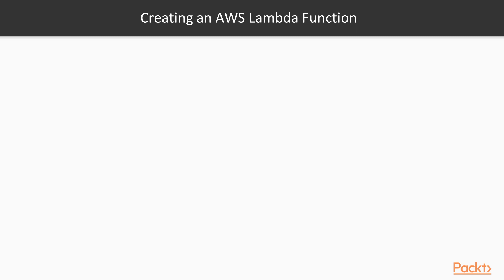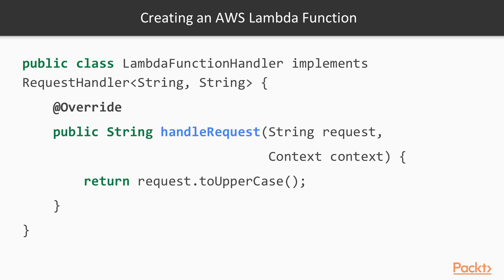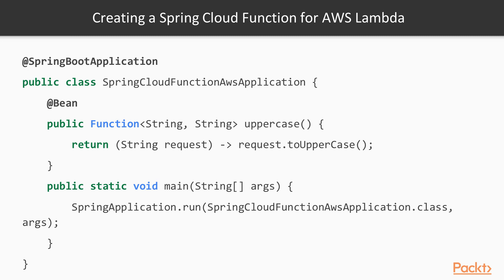Going back to creating an AWS Lambda function to remind ourselves what that looks like: you define a public class implementing RequestHandler with input type String and return type String, then implement the handleRequest method — in the uppercase example, you take the request string, convert it to uppercase, and return it. To do the same operation within a Spring Cloud Function, you would place your Lambda function bean within your main Spring Boot application. You create a method which returns a Function with two types — String and String — taking the request string, uppercasing it, and returning that lambda function.